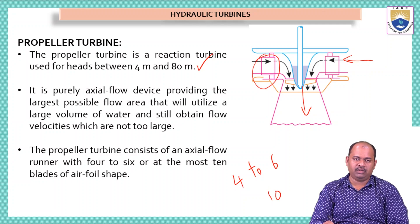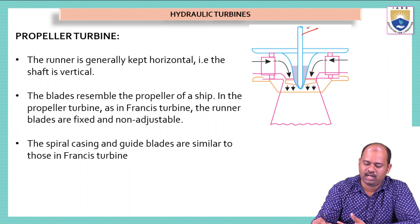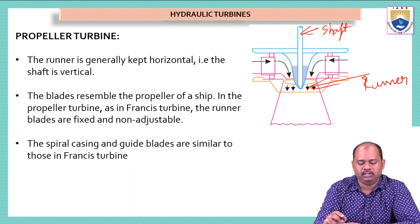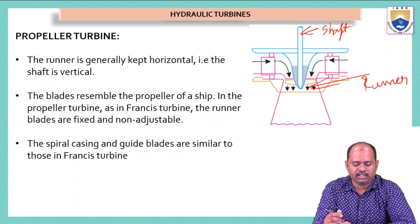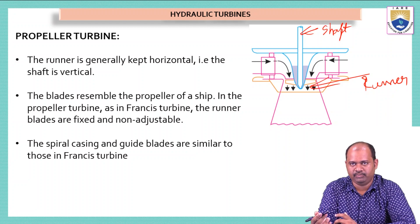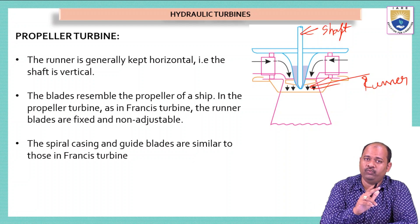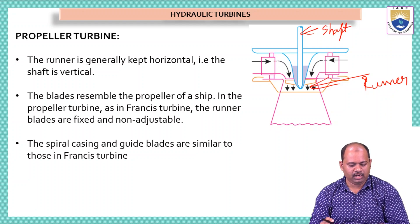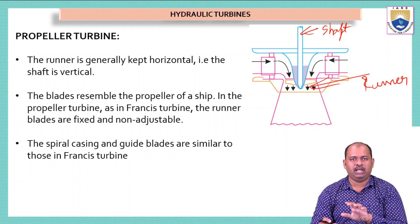The propeller turbine is very similar to the Kaplan turbine, which we will see in the next lecture. The runner is generally kept horizontal with a vertical shaft. The blades resemble the propeller of a ship. In the propeller turbine, as in Francis turbine, the runner blades are fixed and non-adjustable — unlike the guide vanes in Francis turbine which can be adjusted via the governing mechanism. The spiral casing and guide blades are similar to those in Francis turbine.